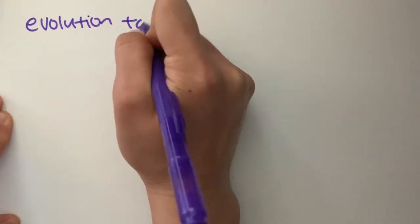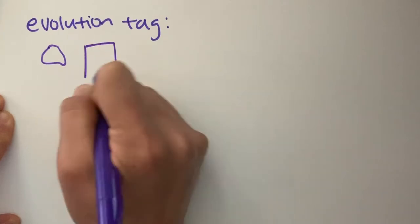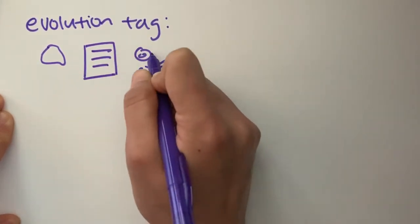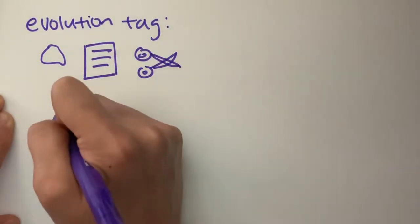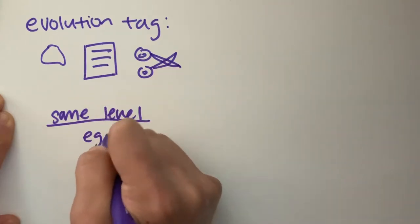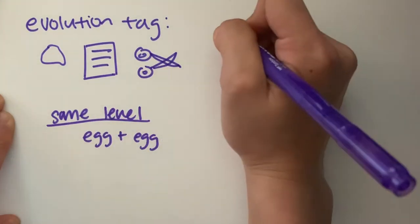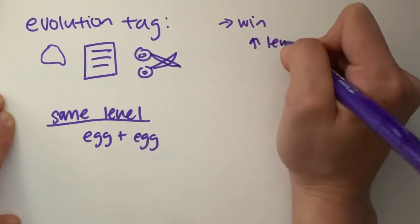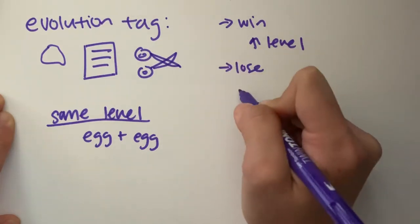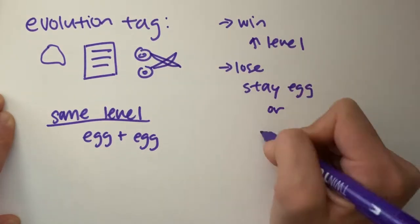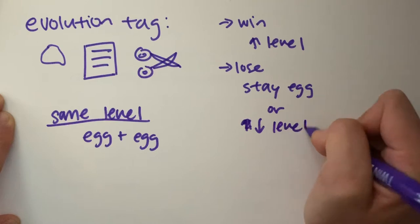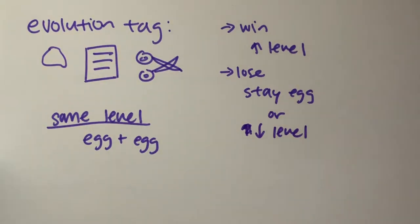The first game we will be playing is called evolution tag. You will wander around the location and battle each other in rock, paper, scissors. You can only challenge other students of the same level. For example, it moves down a level if they are a chicken or higher.